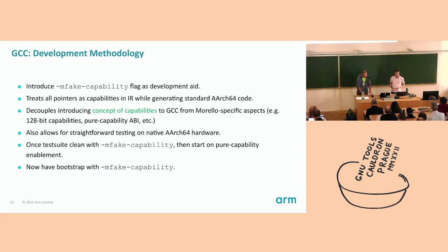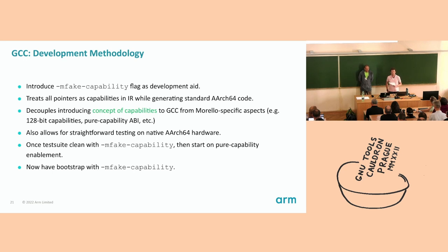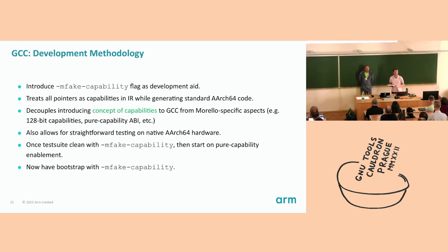To simplify the task and gain confidence in the approach, we introduced a development aid: a flag called -mfake-capability. This flag causes all pointers to be represented using capabilities in the IR — similar to pure capability mode, but we're still only generating AArch64 code, so the fake capabilities are still only 64 bits. This allowed us to decouple introducing the concept of capabilities and new IR constructs to GCC from the Morello-specific aspects, such as having 128-bit capabilities and implementing the pure capability PCS. It also allows for straightforward testing using stock AArch64 hardware. Once the test suite was mostly clean with -mfake-capability, we could then start on pure capability enablement, and more recently we've gained C++ support and managed to get the compiler bootstrapping with this flag.